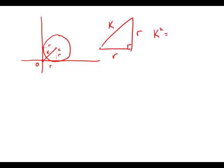K squared equals R squared plus R squared. So K squared equals 2R squared. Divide by 2. K squared over 2 equals R squared.